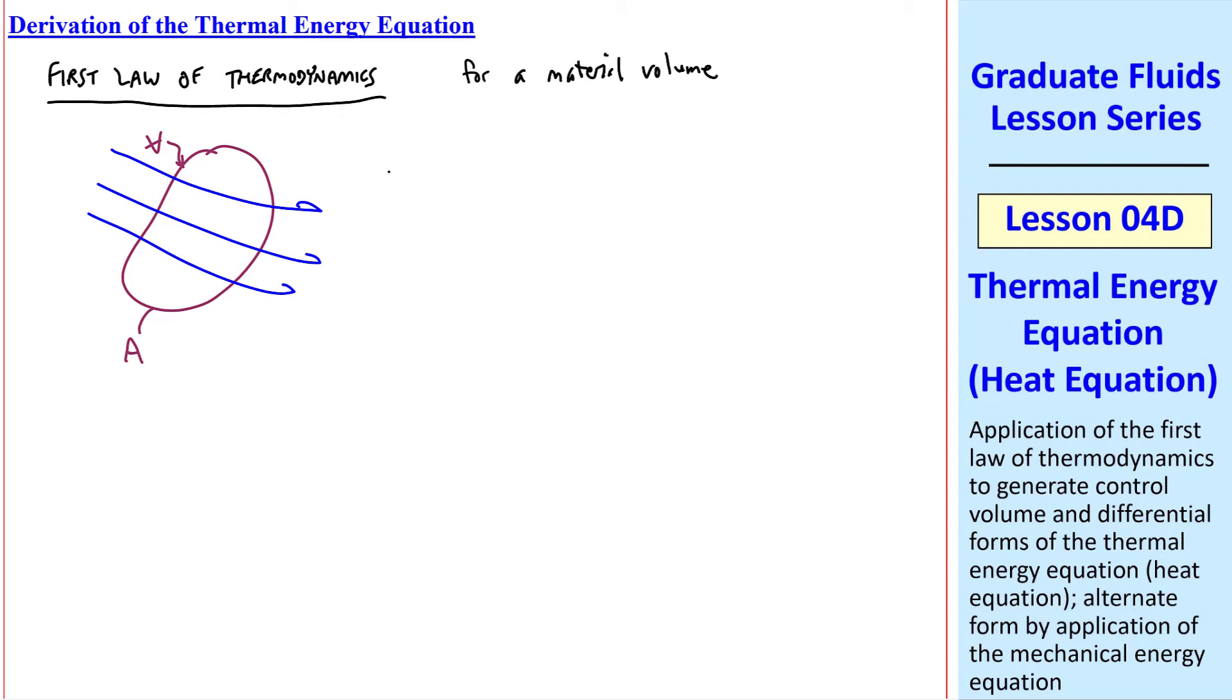First, we'll write the first law in word form. The rate of change of stored energy in the volume is equal to the rate of heat transfer into the volume, plus the rate of work done on the volume. Note that since we're doing work on the volume, we have a plus sign. You may have learned the first law differently, with rate of work done by the volume defined as positive, and therefore having a negative sign here.